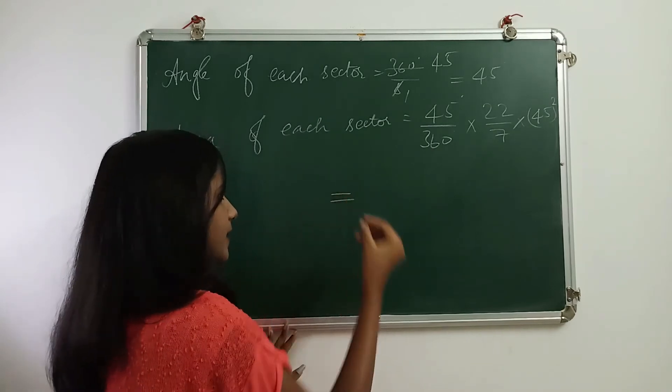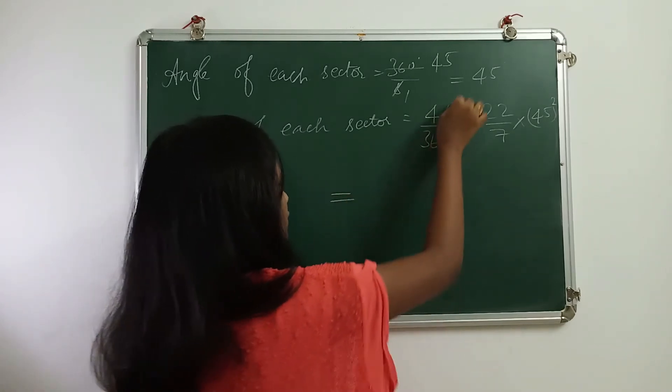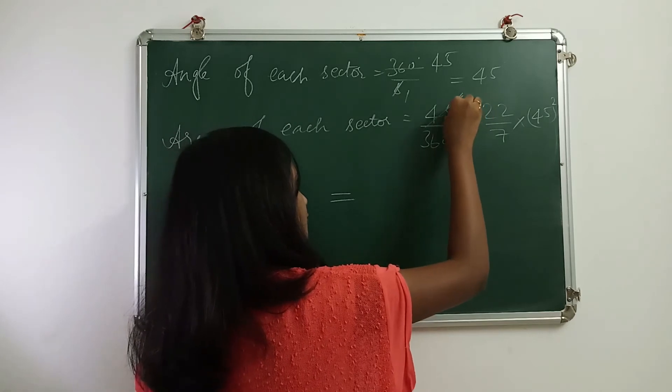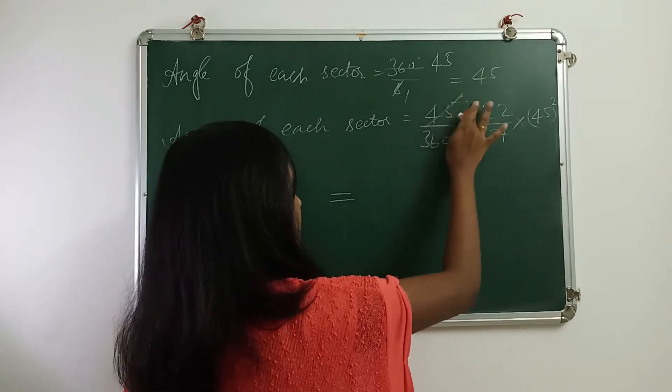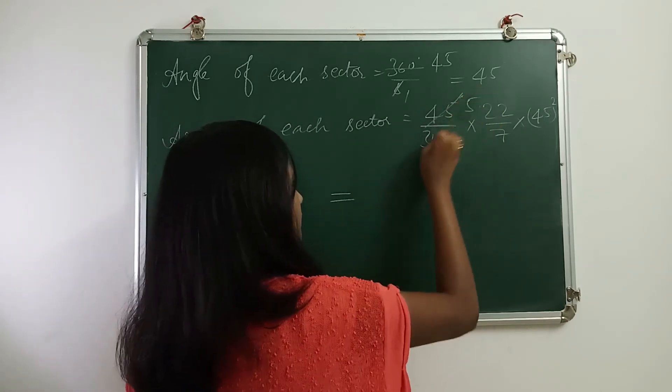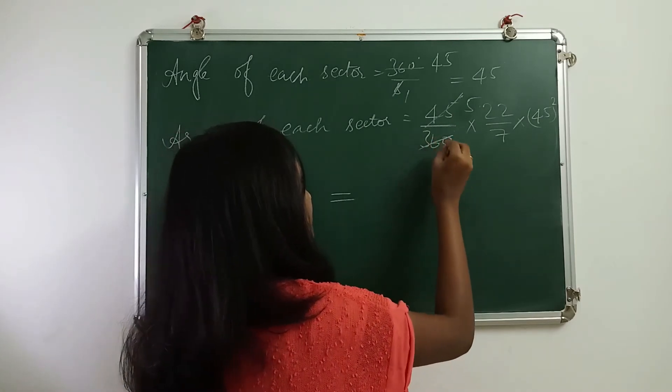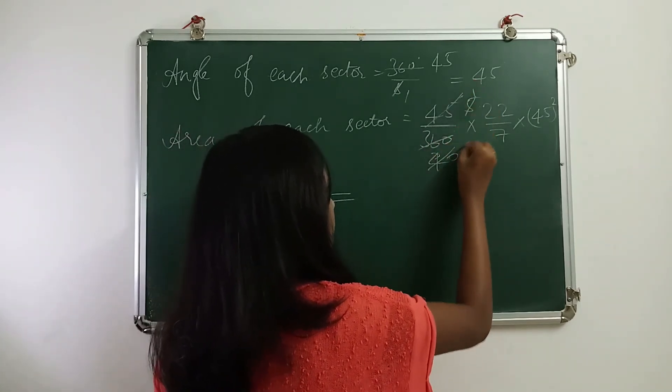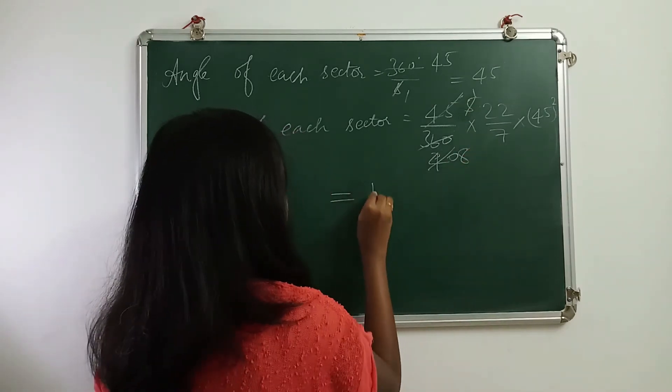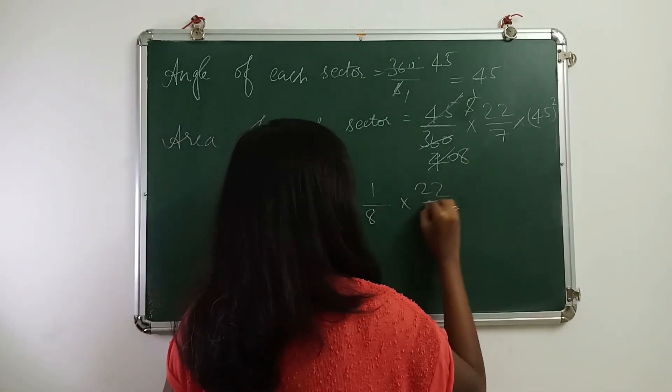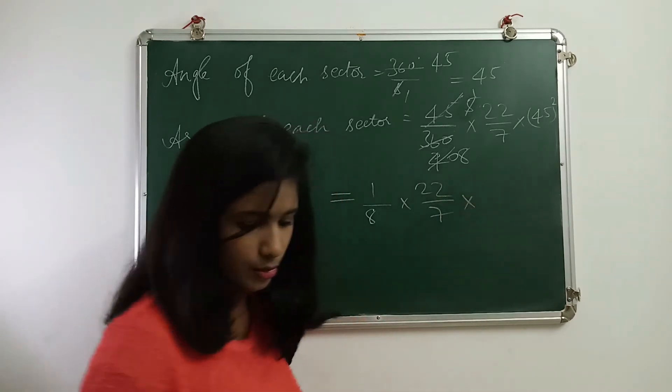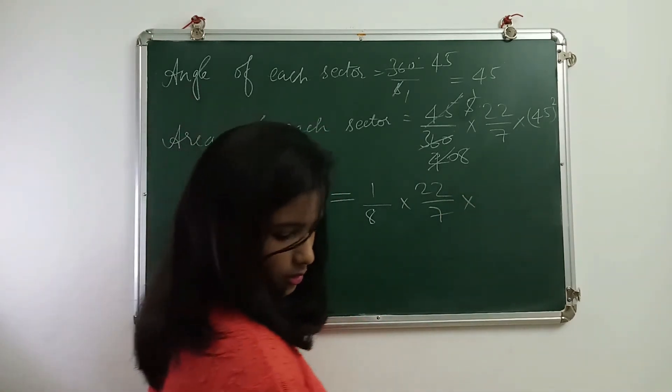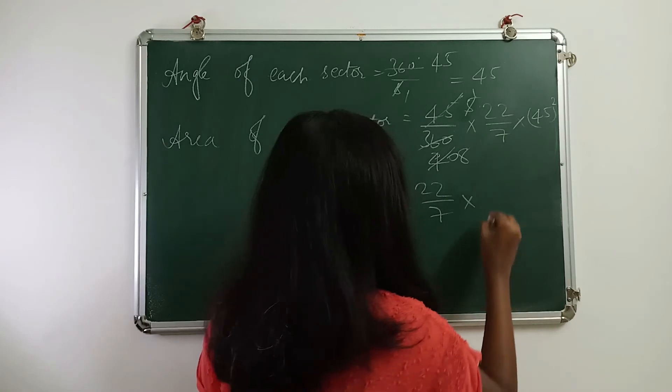Now, canceling that, we have this to be 5 in terms of 9, so this will be 1, 8. So, we have 1 by 8 into 22 by 7 into 2025, which is 45 square.